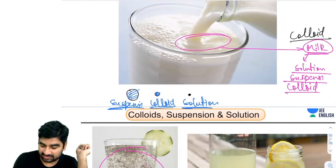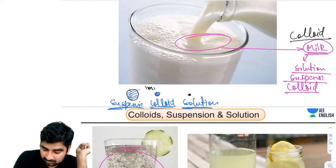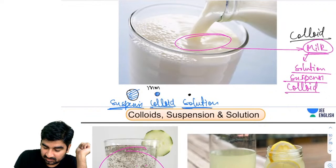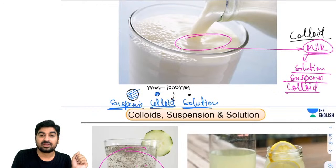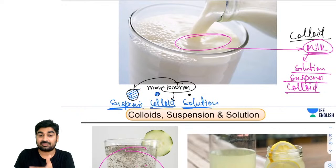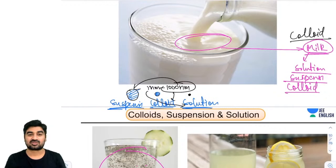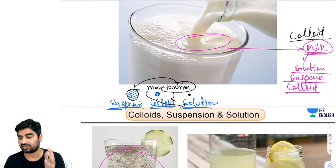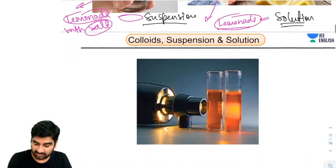So for analogy, if particle size is very big, I call it suspension; if it is very small, I call it solution; and if it is neither very big nor very small, I call it a colloid. If the diameter is 1 nanometer to 1000 nanometers, it is a colloid. If more than 1000 nanometers, it is a suspension. If less than 1 nanometer, it is a solution. Everything depends upon particle size.